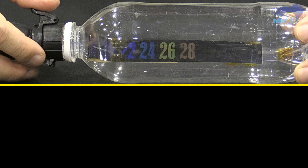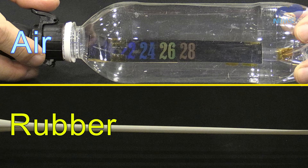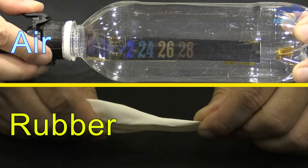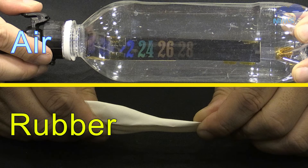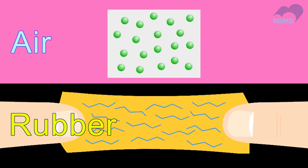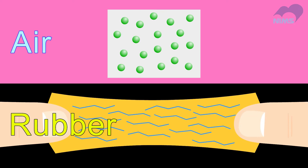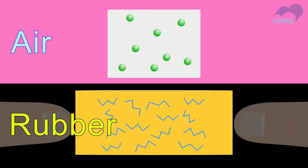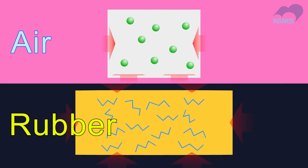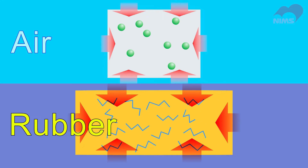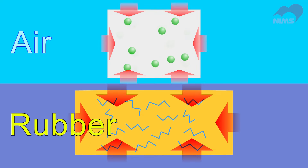Now let's think this over. What do the air-filled bottle and the balloon have in common? In both cases, the material absorbs heat from its surroundings when its molecules go from a restricted to a free and random configuration.